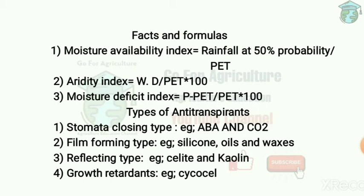The film forming type of anti-transpirant retards moisture loss due to the formation of a thin film as a physical barrier; examples are silicon oil and waxes. The reflecting type reflects radiation and thus reduces leaf temperature and vapor pressure gradient.